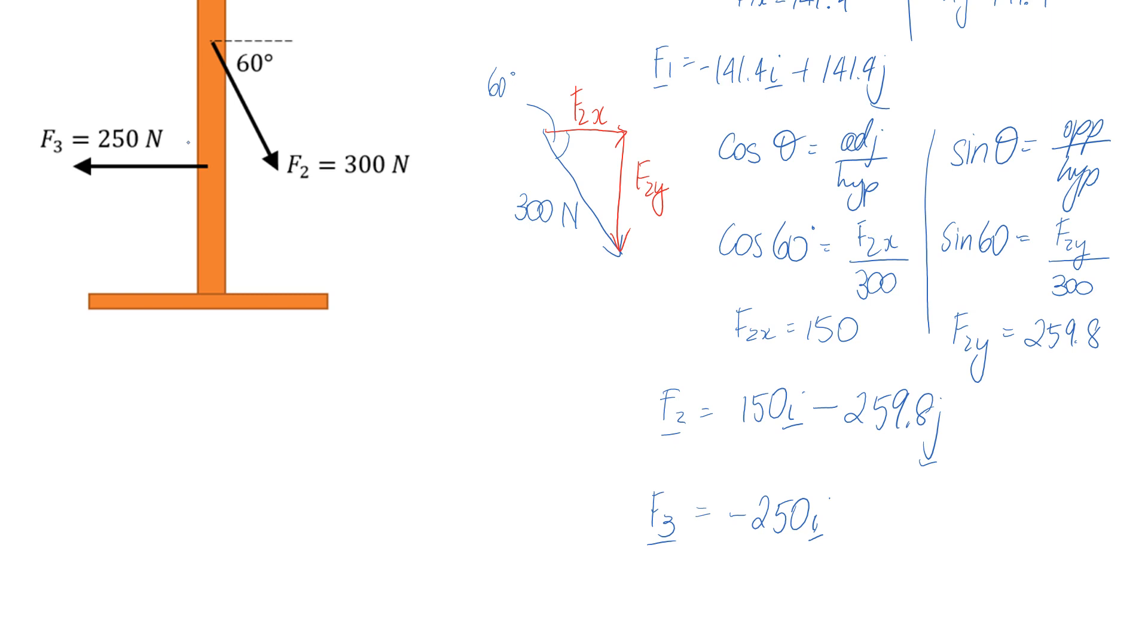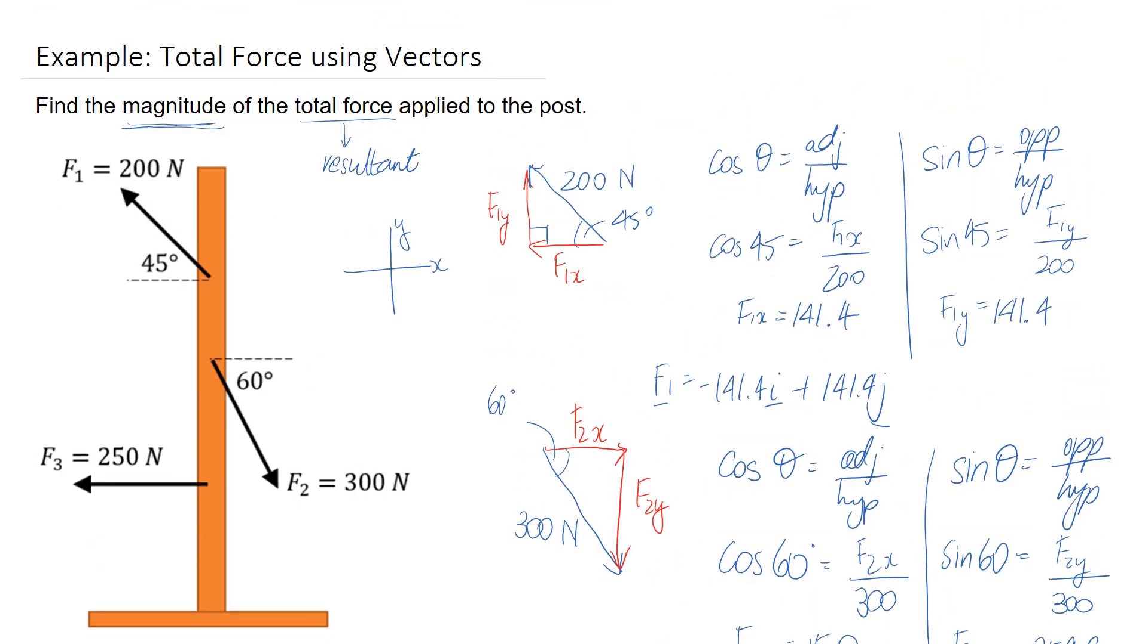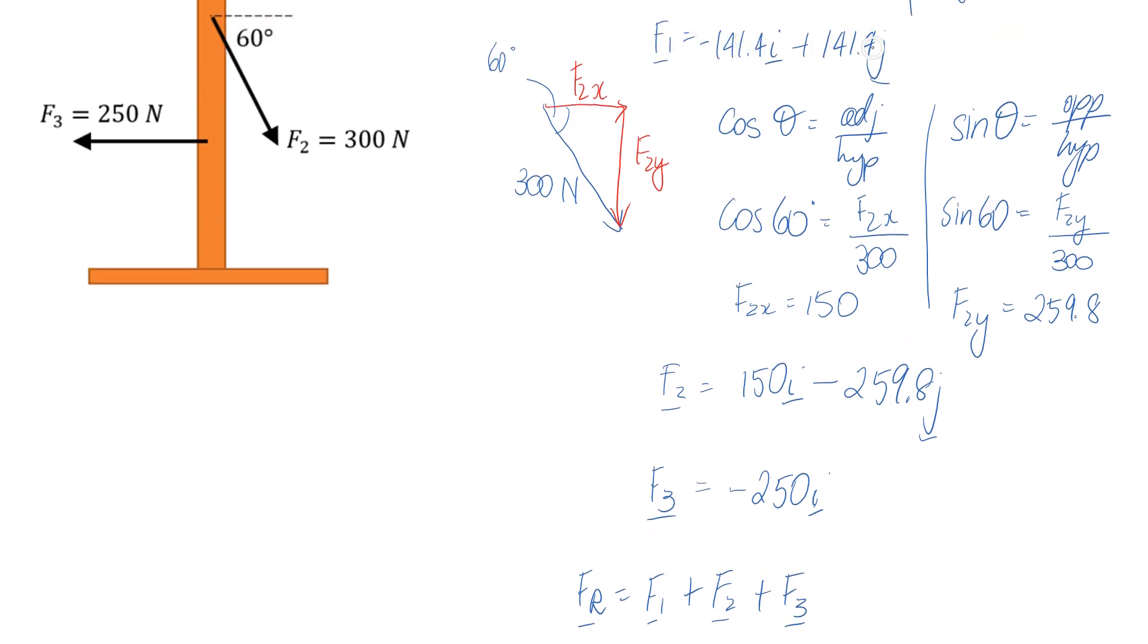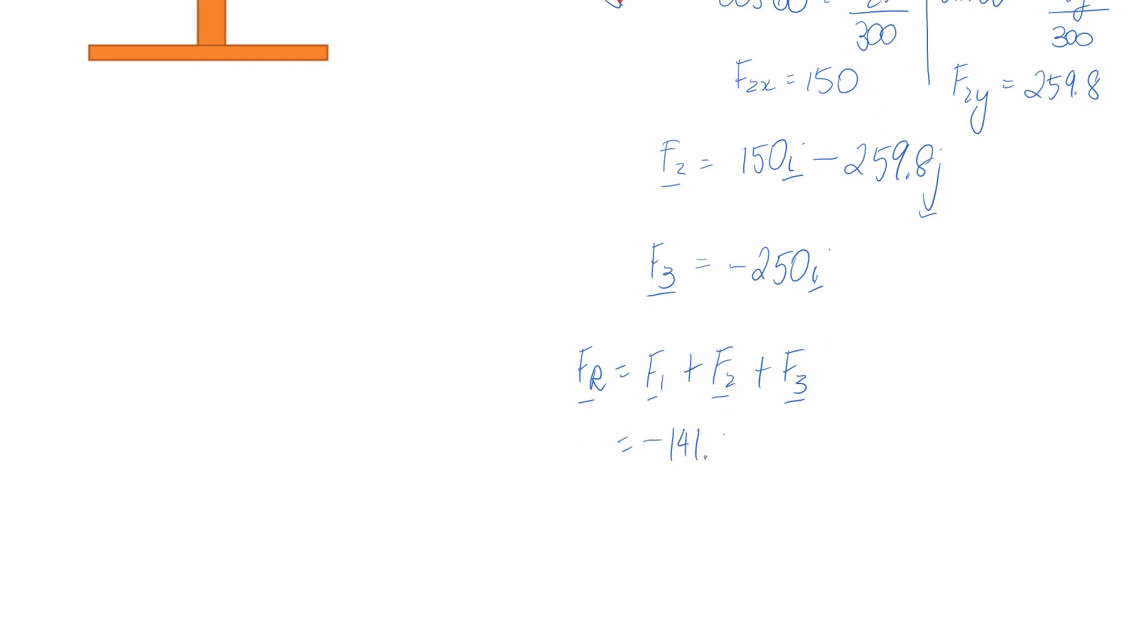So we've now got a vector representation for F1, F2 and F3. And what we now need to do is figure out the total force, which is the resultant. So I'm going to call my resultant FR, and all we need to do is add the three forces together. And because we've converted to vector form, it should be pretty easy. So F1 was negative 141.4i plus 141.4j. F2 is 150i minus 259.8j. And then finally we add on F3, which is negative 250i.